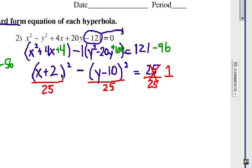When I do that, I notice that the center is going to be at negative 2, positive 10, and the a and the b values are both going to be 5. So we'd be able to graph this hyperbola if we needed to.